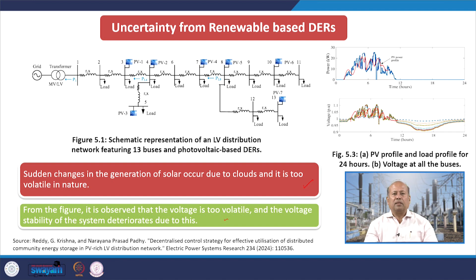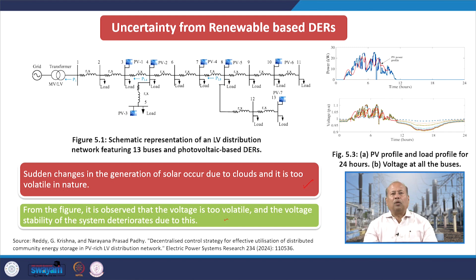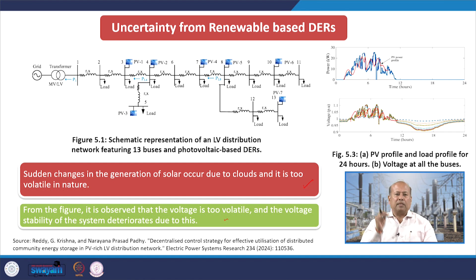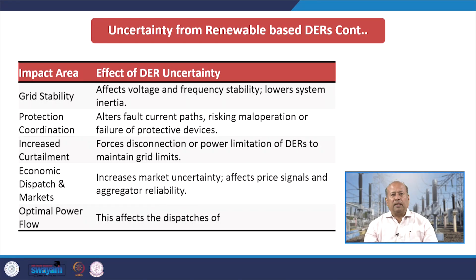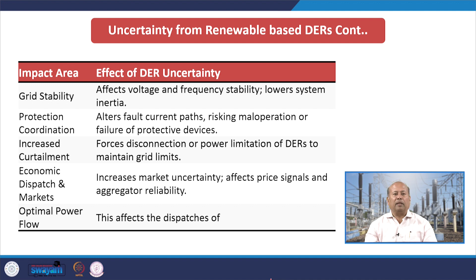If PV plants produce energy with too much deviation — due to clouds floating over PV panels or other reasons — if the generation is fluctuating significantly or there is no certainty in generation, that will significantly disturb voltage profiles. In case of uncertainty from renewable based DERs, the impact could be on grid stability, protection coordination, increased curtailment, economic dispatch and markets, and optimal power flow.